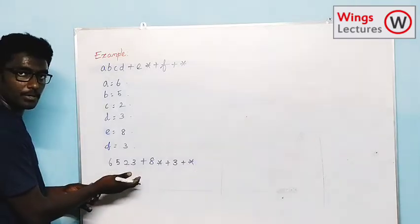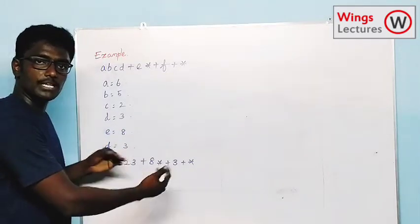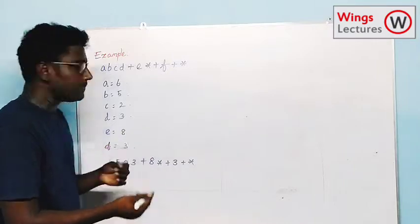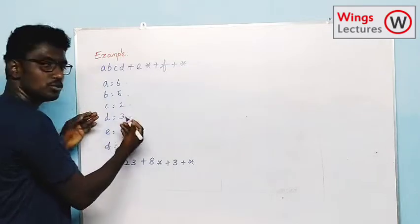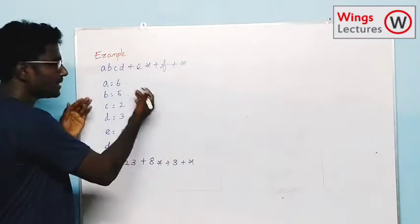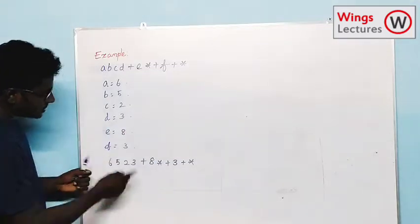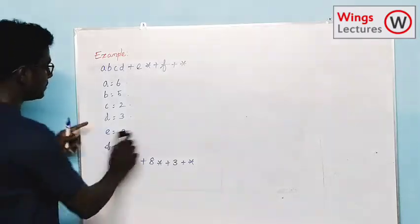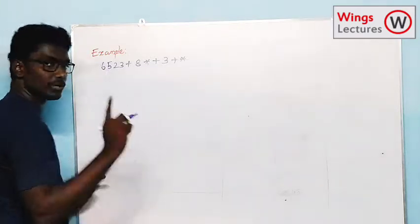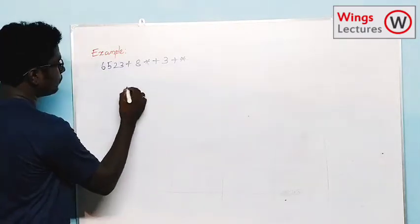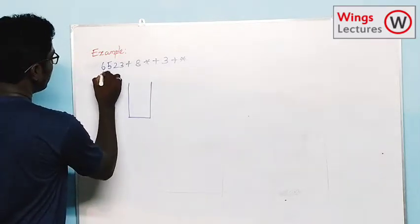So this is the first step. Sometimes in a question they will give the numbers directly, so we can start proceeding from step 1 onwards. But if they didn't give the value for the operand, we have to assume some value, or else they used to give the values for the operand. Now I have this question, so I am going to make an empty stack and then read one by one.